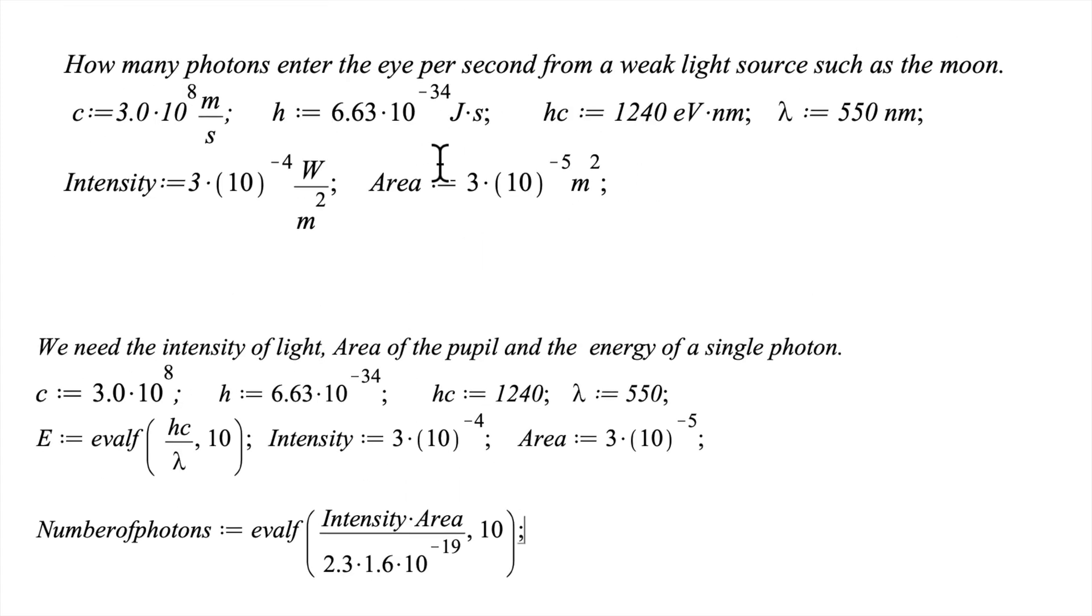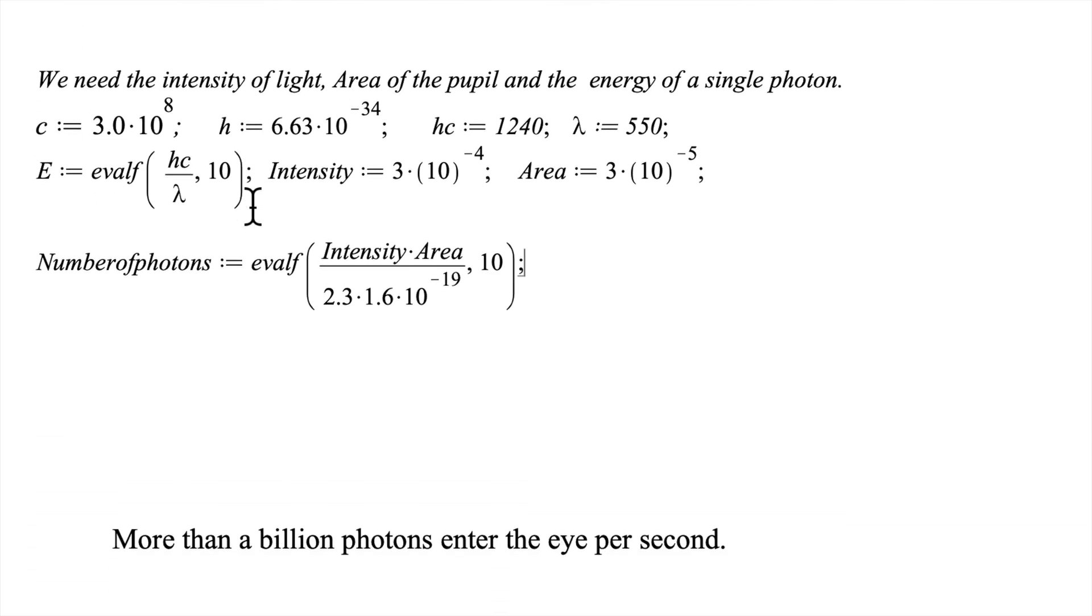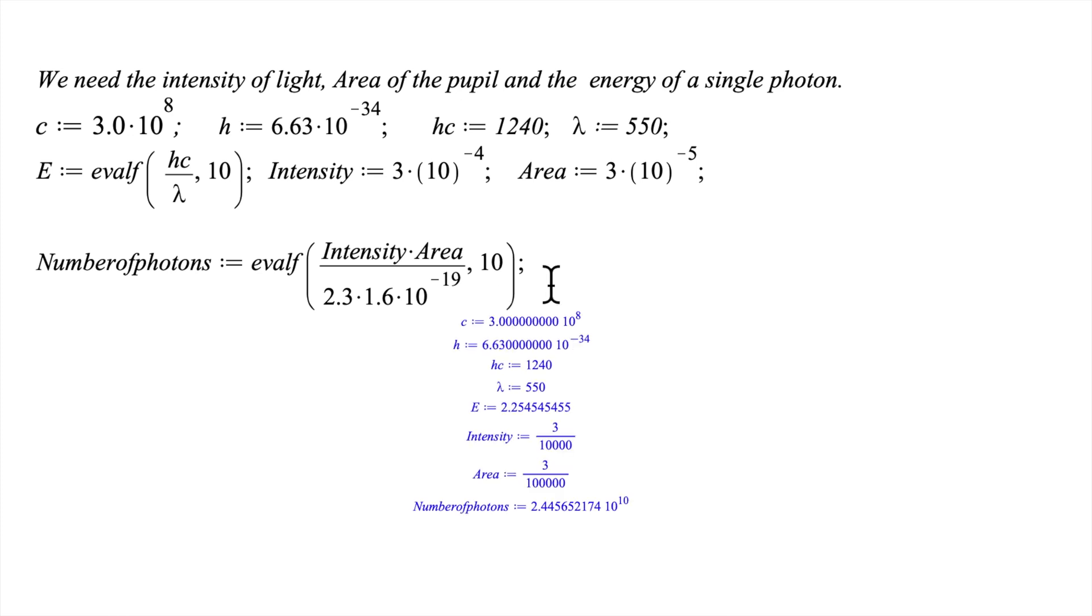We need the intensity of light and the area of the pupil. Here I wanted to share the units: joules per second, meters per second, and so on. Here we put everything together. We have the energy, the intensity of light, the area of the pupil. To get the number of photons, we multiply the intensity of light times the area over the energy. This 10 right here is just the number of factors I want to get in the answer. Now click enter.